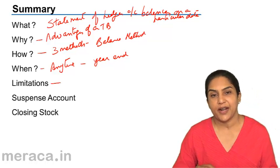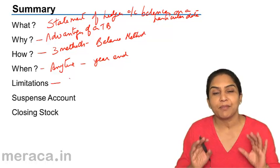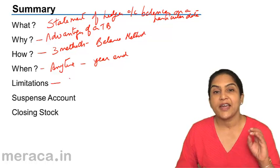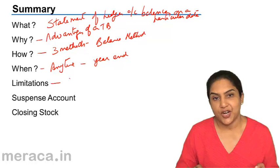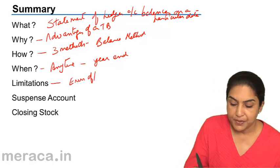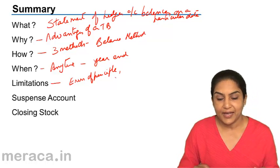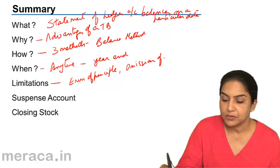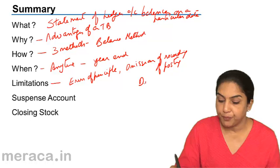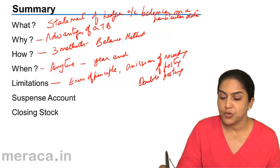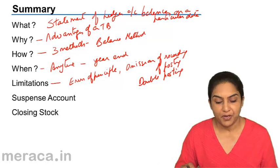The biggest limitation of a trial balance is that it does not confirm the full accuracy of the books — only the arithmetical accuracy is confirmed. Errors of principle, errors of omission of posting, errors of omission of recording — these will not be reflected in the trial balance. For example, errors of principle: instead of debiting an asset account, we could debit an expense account, and the trial balance will still agree. Omission of a transaction — if we forget to record completely, or if we do not post, or if we post doubly — both the debit and the credit side would be wrong, but both will tally. Such errors will not be reflected by the trial balance.